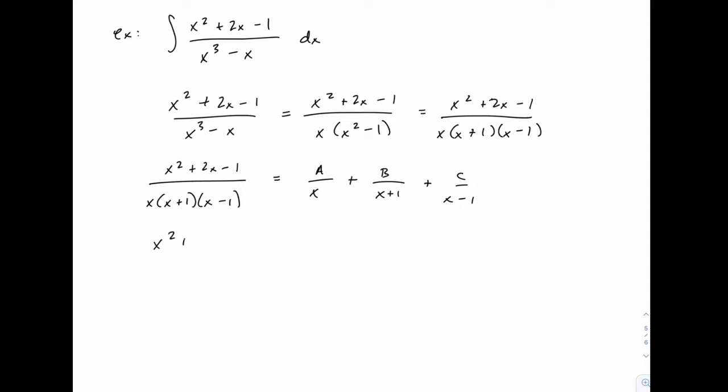When we do this, the left-hand side just leaves its numerator x squared plus 2x minus 1. On the right-hand side, A over x, that x will cancel with the x in this denominator, so we'll just have A times x plus 1 and x minus 1.